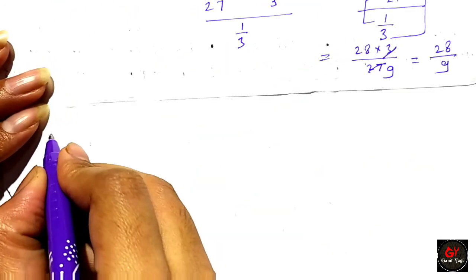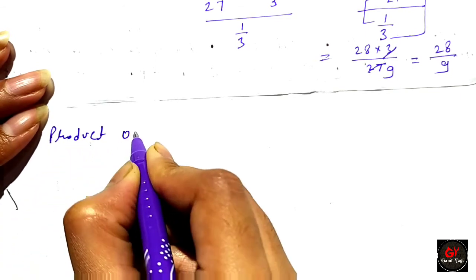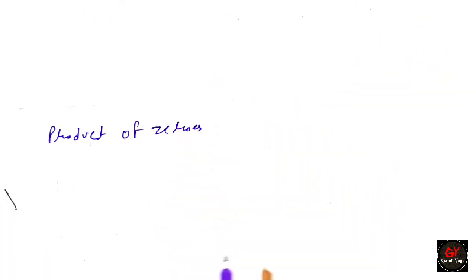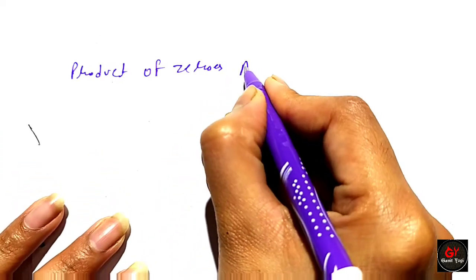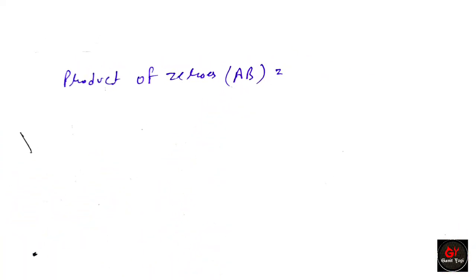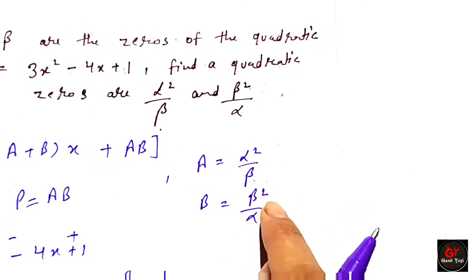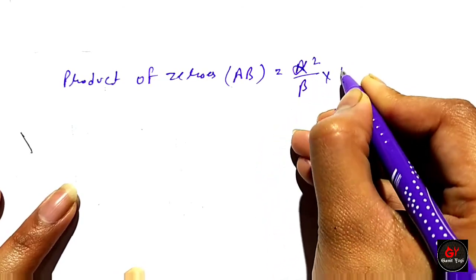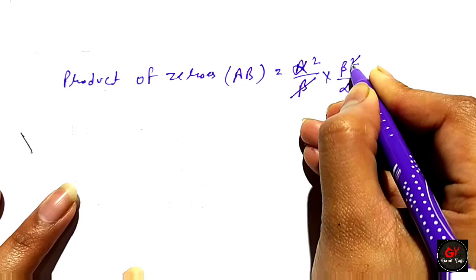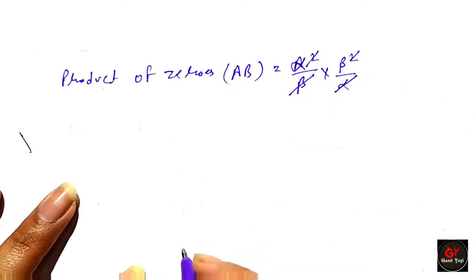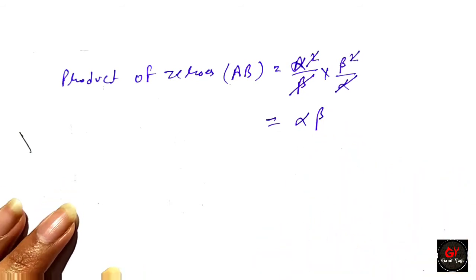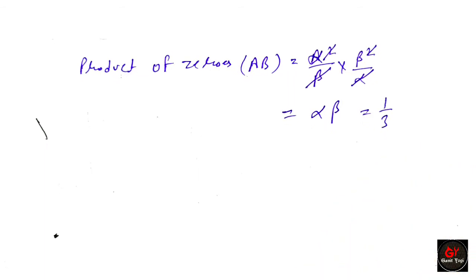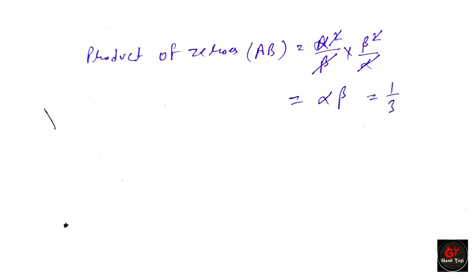Now we find the product of the new zeros. The product a times v equals alpha squared over beta times beta squared over alpha. The alpha and beta terms cancel, leaving simply alpha times beta. Since alpha beta equals 1 over 3, the product of zeros is 1 over 3.